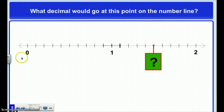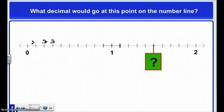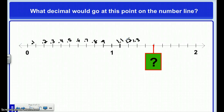Again, what decimal would go on this number line? If I know the pattern I'm going to follow, you should already have the answer as I'm filling this in. So my answer is one whole and 5 tenths, or one whole and 50 hundredths.